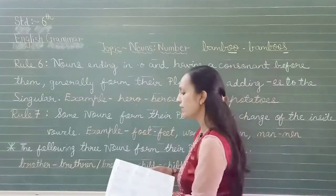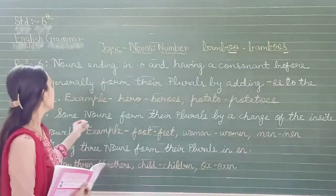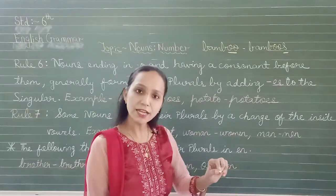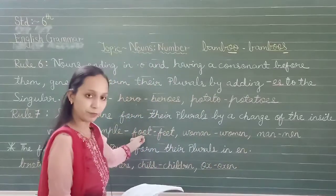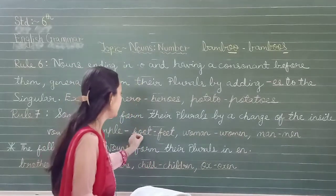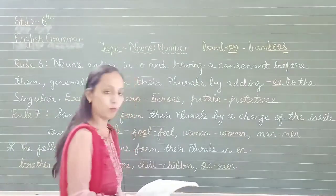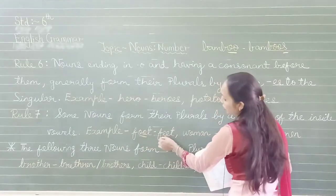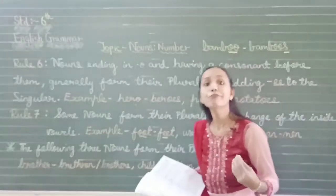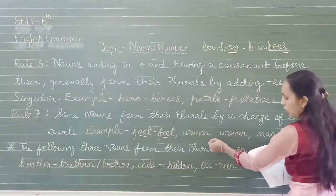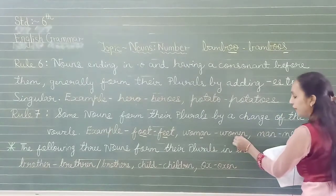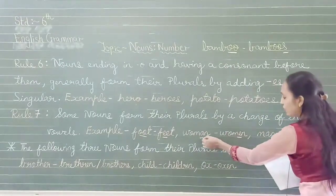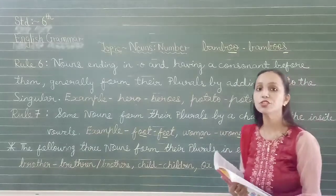Rule number 7: Some nouns form their plural by a change of the inside vowels. For example, foot — the vowel is double-O — and double-O changes to double-E, so foot becomes feet. Woman — the vowel A changes to E — so woman becomes women. Man — A changes to E — so one man, more than one, we say men.